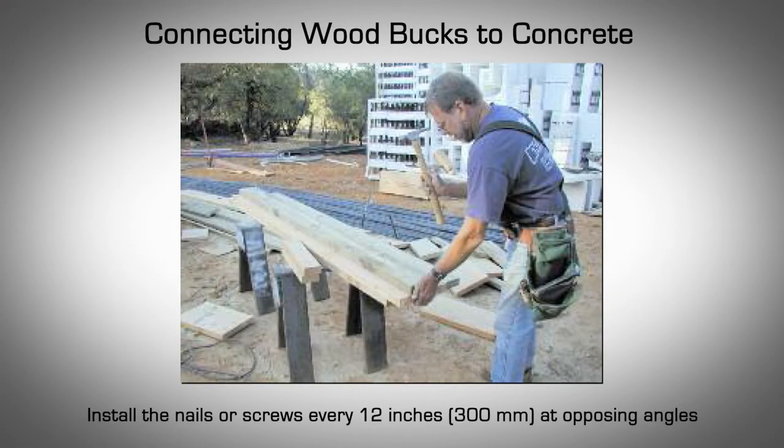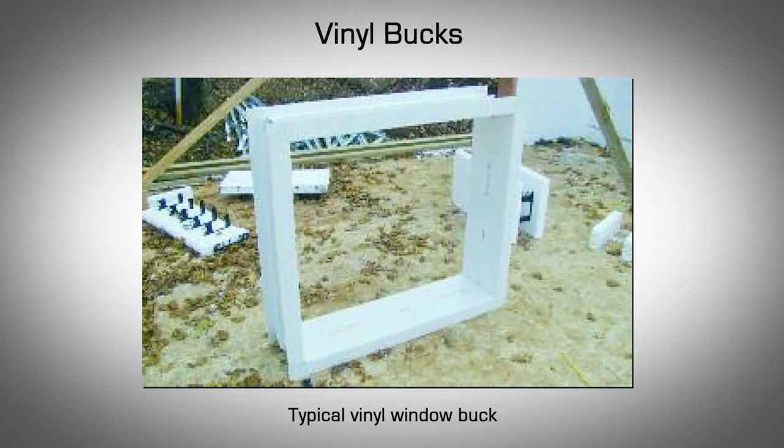Connecting Wood Bucks to Concrete: The simplest way to connect wood bucks to the concrete wall is to drive galvanized 16D nails through the bucks so the nails will be embedded into the concrete when it is poured. Alternatively, galvanized deck screws can be used. Install the nails or screws every 12 inches at opposing angles to prevent movement of the buck once the concrete has set.